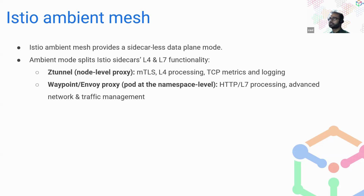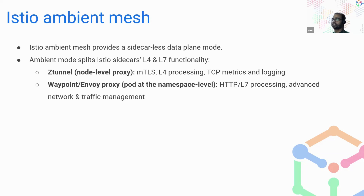How it works: the Envoy proxy usually works on L4 and L7 layers of the network. Ambient mode divides that functionality into two parts. L4 functionality is shifted from Envoy to ztunnel. In ambient mesh, it is divided into two parts — one is ztunnel, which works on L4, and another is the waypoint proxy, which is essentially an Envoy proxy that works on L7. All higher-level advanced routing and traffic management can be done at L7 level.